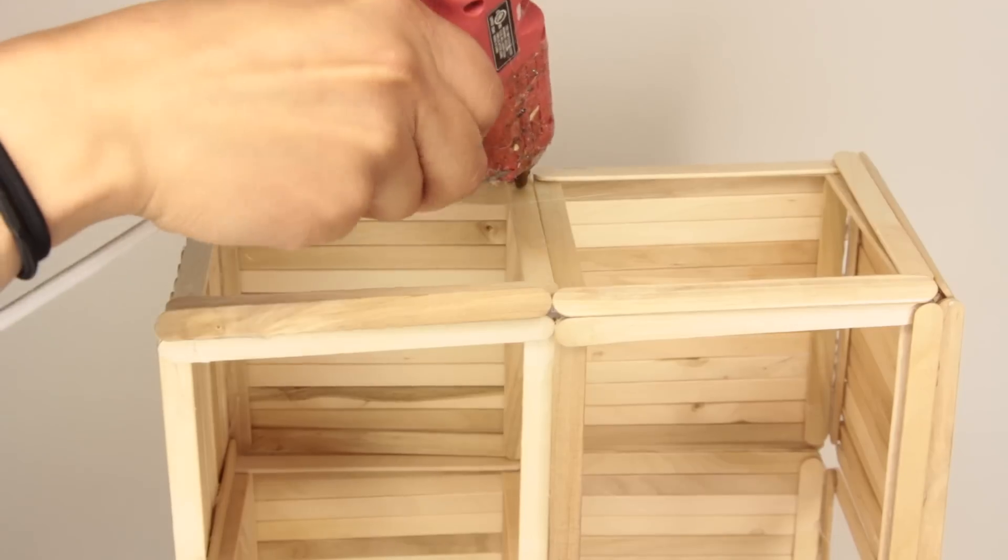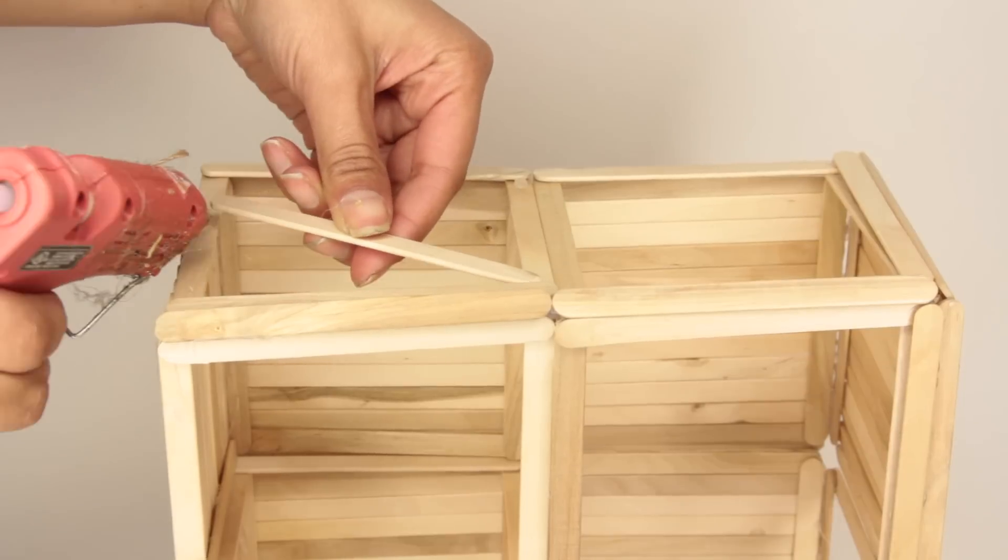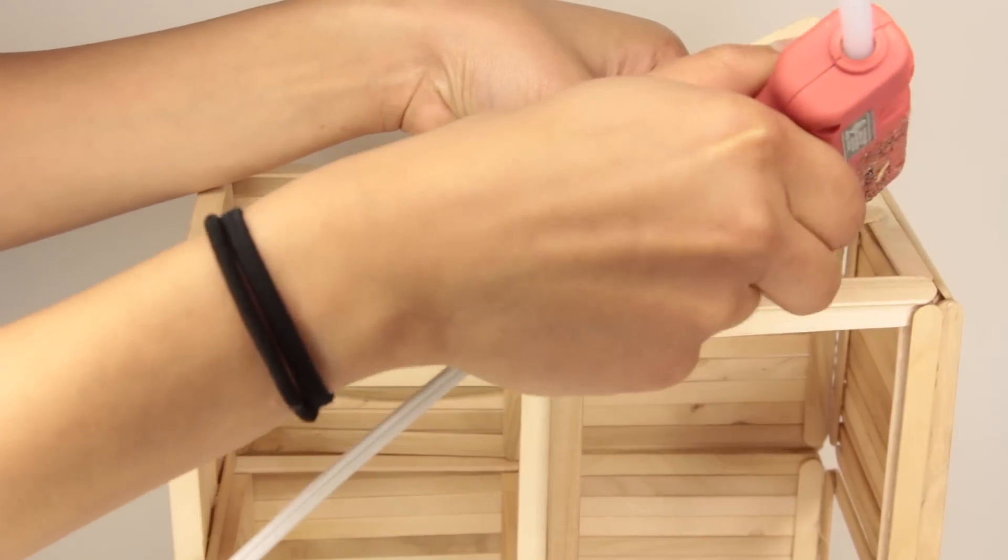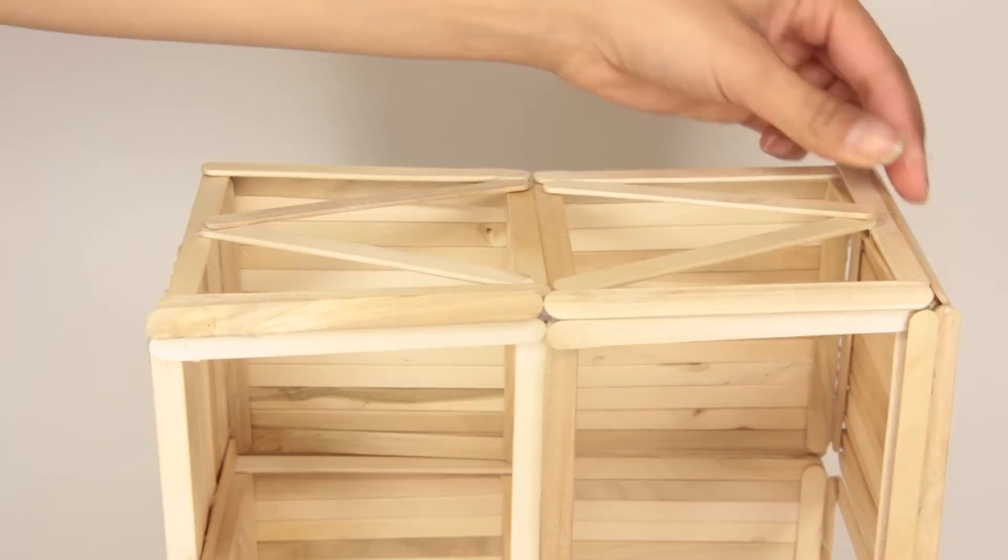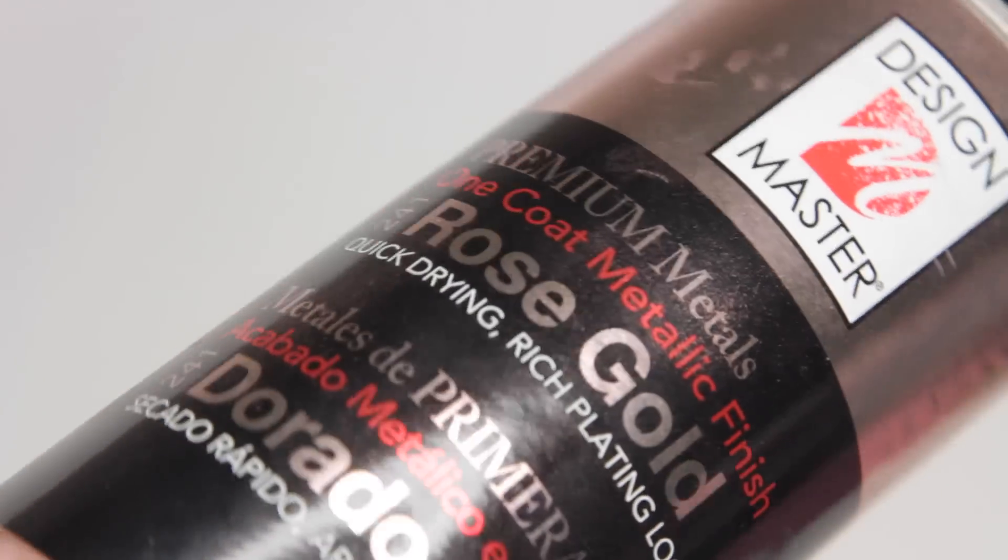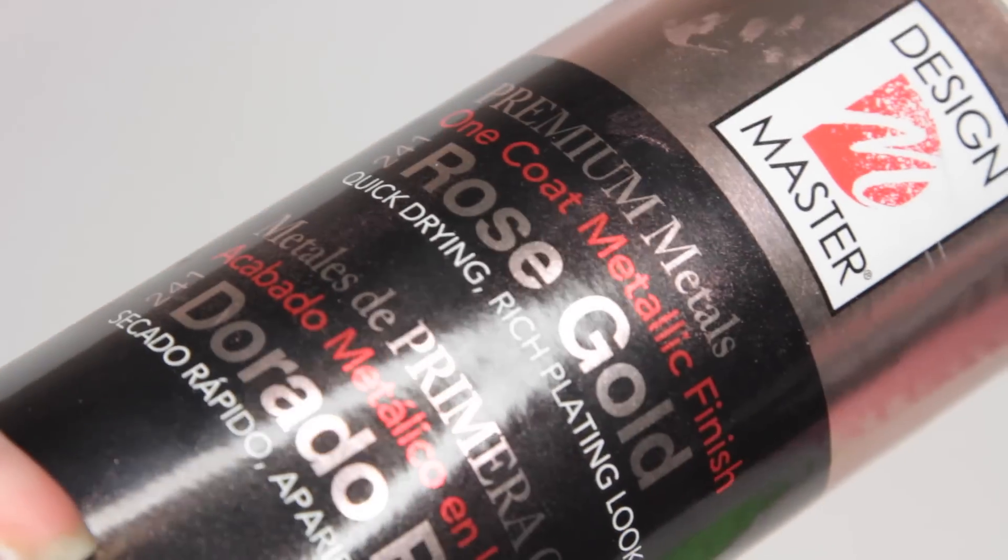Now to both sides of this cube, I went ahead and I glued on two popsicle sticks to the top and the bottom to make a diamond shape. Again, you can leave this as is or you can paint it. I ended up painting mine using this Design Master rose gold spray paint.